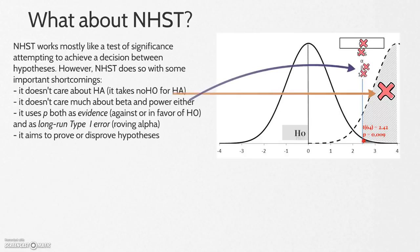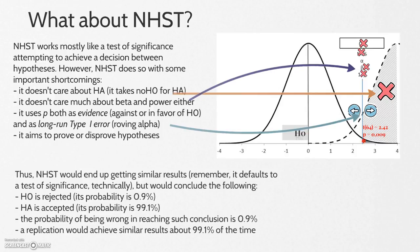And it uses p both as evidence against or in favor of the null hypothesis and as a long-run Type I error or roving alpha. It also aims to prove or disprove hypotheses.